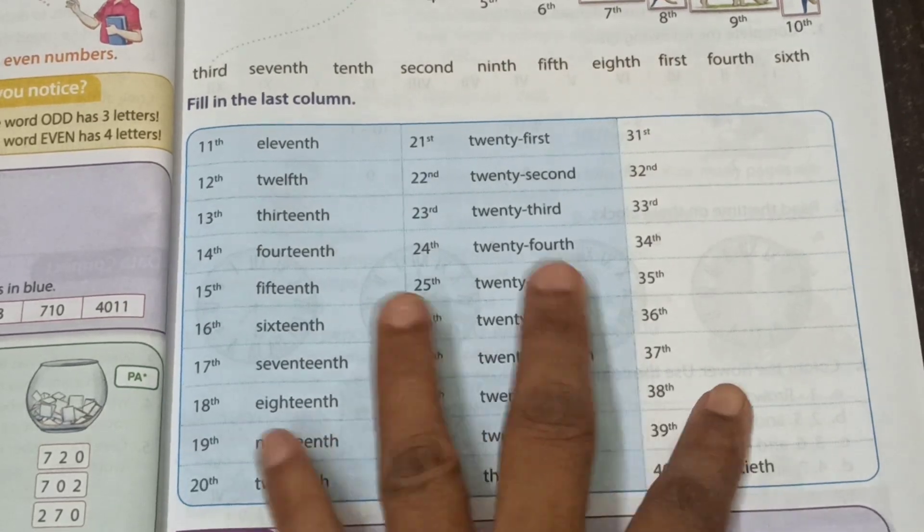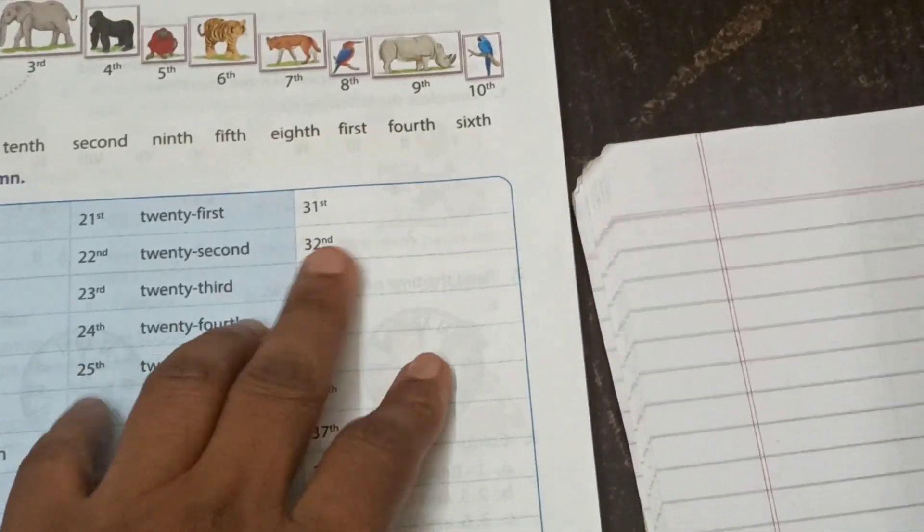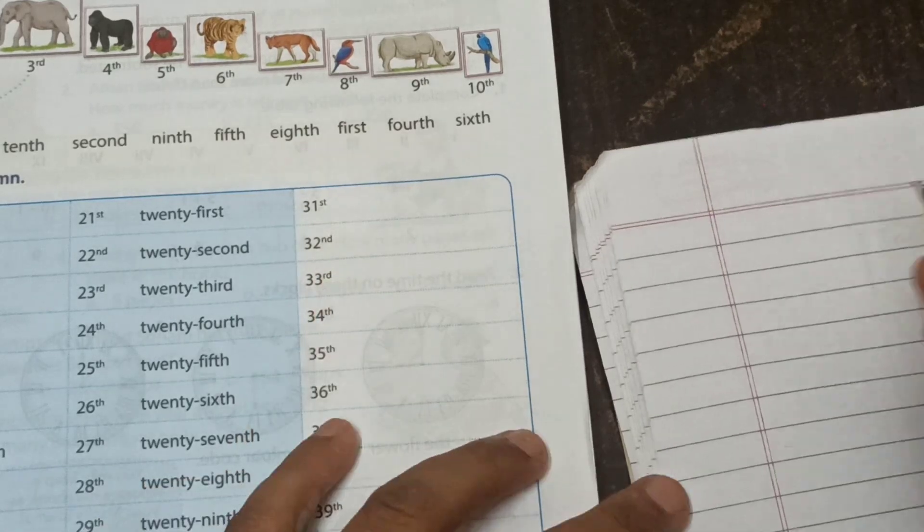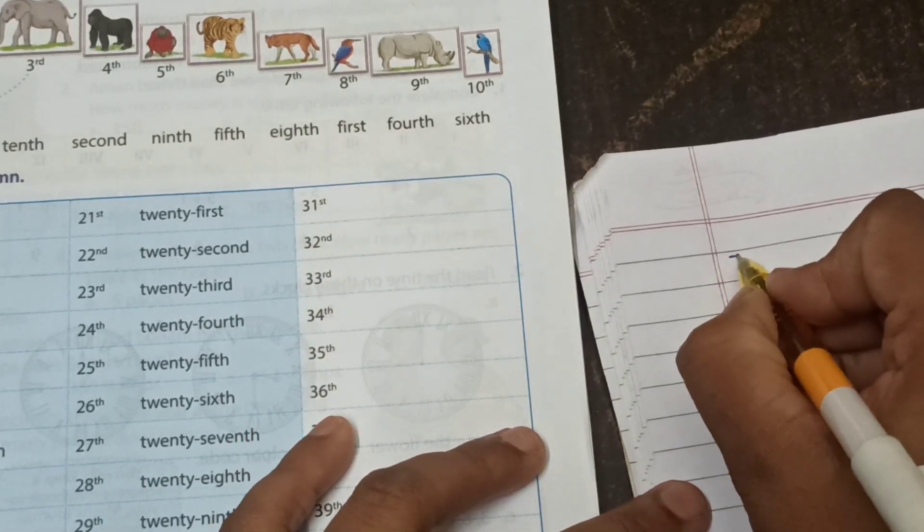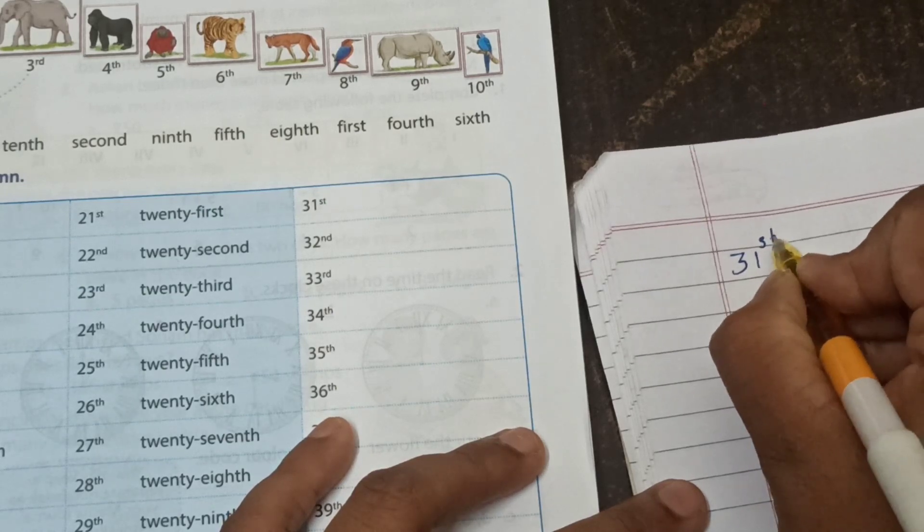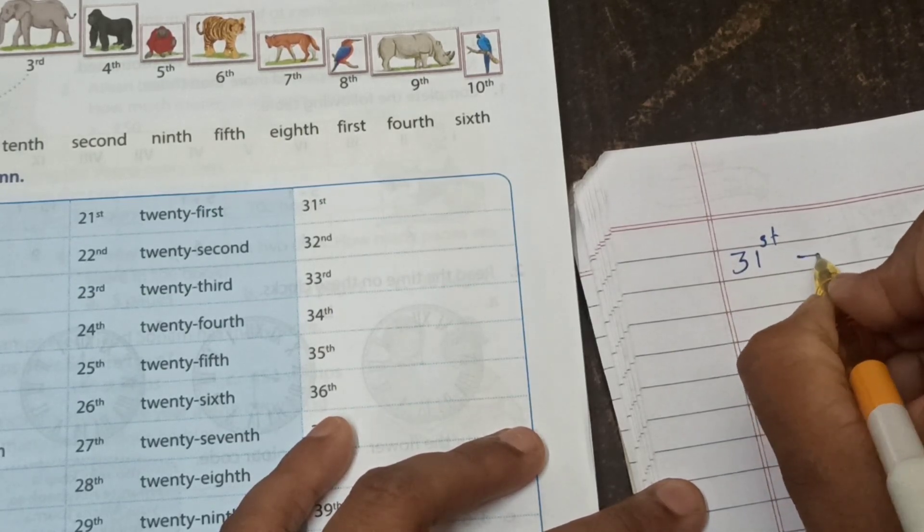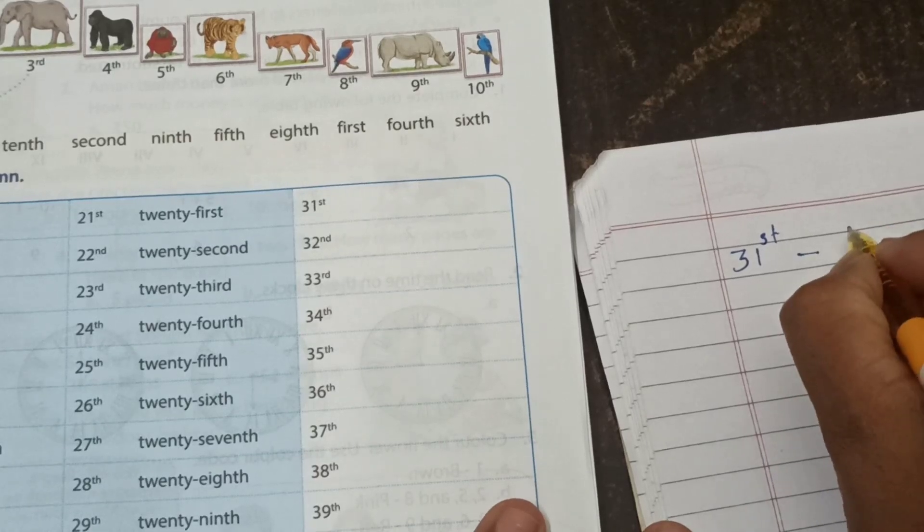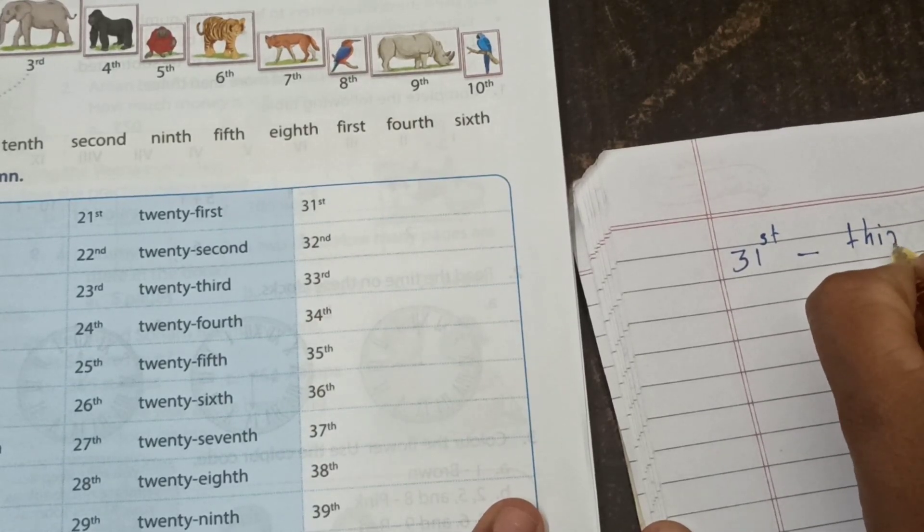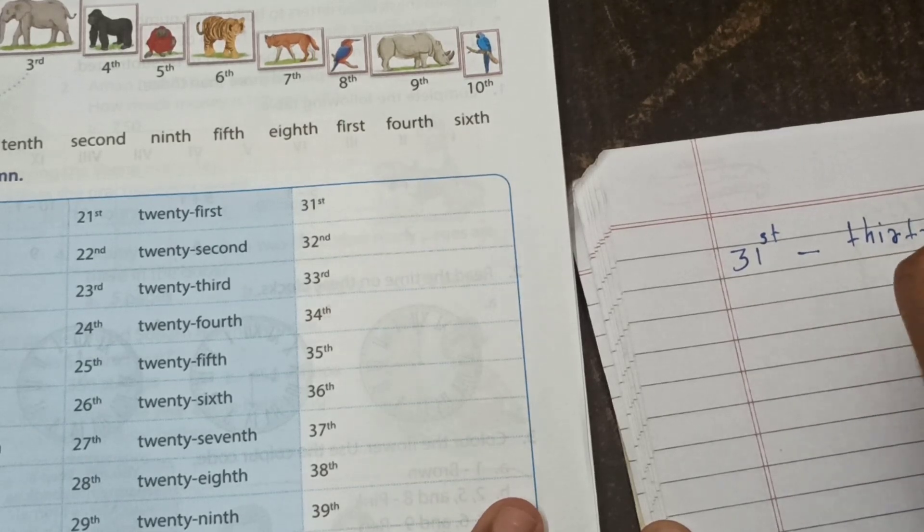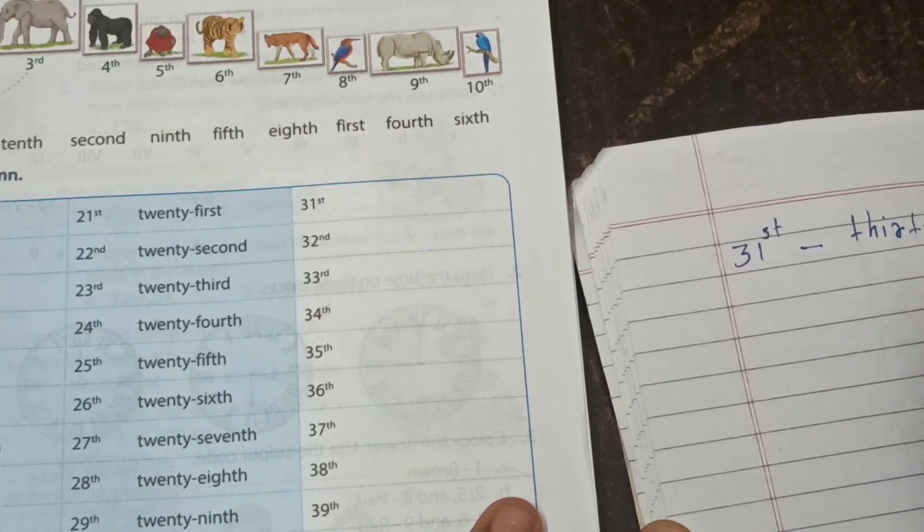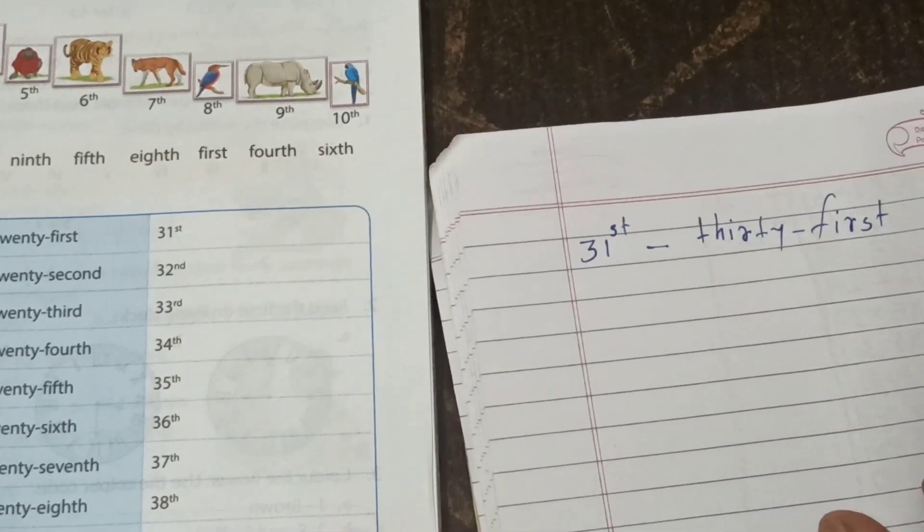This one: 31st. How we write down 31st? See, 31, here has the upside. And we write down 30: T-H-I-R-T-Y. 31st: F-I-R-S-T. 31st. Yes, all of you can see.